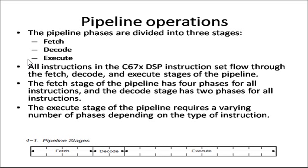Pipeline phases are divided into three stages, as you all know in any controller. The first stage is fetch, second is decode, and third is execute. All instructions in the C67x DSP instruction set flow through the fetch, decode, and execute stages. The fetch stage has four phases, the decode stage has two phases, and the execute stage has a variable number of phases depending on the type of instruction.